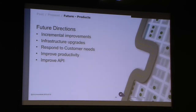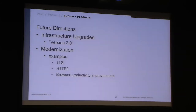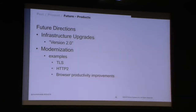We'll be discussing incremental improvements — making it possible to port to the new version without saying start over. We'll continue revamping some major frameworks, coming out with version 2.0 things. We'll also continue to modernize — examples from the past include moving to TLS from SSL. And as you see with this release, HTTP 2 — continuing to improve productivity wherever we can in the product.